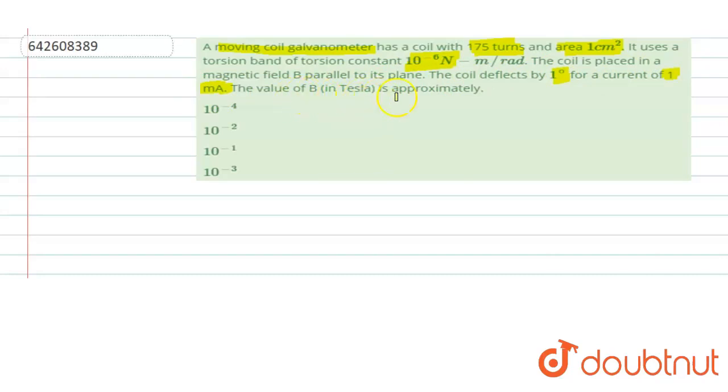So we have to find the value of the magnetic field in Tesla, approximately. Let's understand the concept. So this is the case of the moving coil galvanometer.